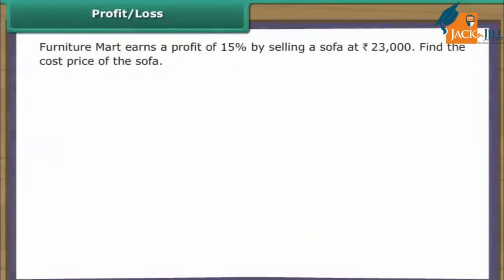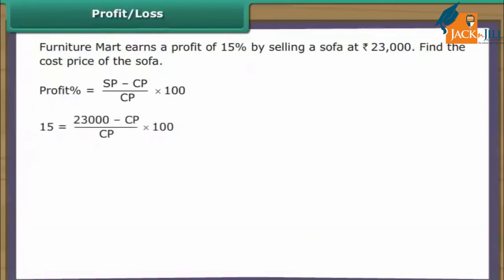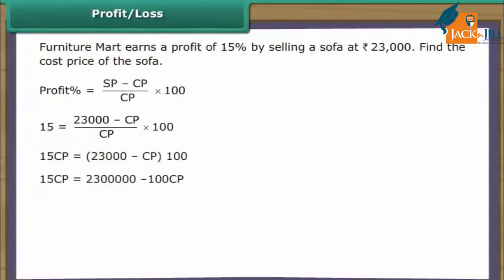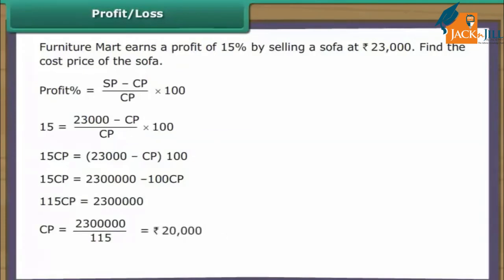Furniture Mart earns a profit of 15% by selling a sofa at Rs. 23,000. Find the cost price of the sofa. Using profit% = (SP − CP)/CP × 100: 15 = (23,000 − CP)/CP × 100. Solving: 15 CP = (23,000 − CP) × 100, giving CP = 23,000/115 = Rs. 20,000.